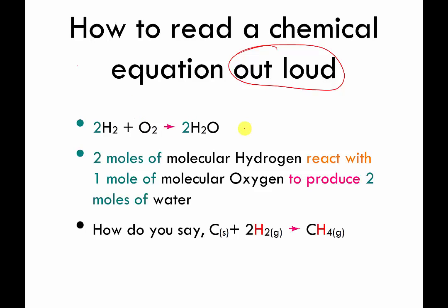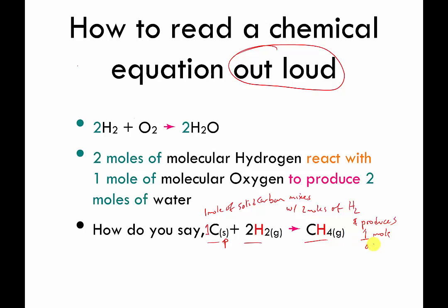Pause and think about how you would read the next equation out loud in terms of moles. There are many valid ways to say it. What I would say is: one mole of solid carbon — that 's' means solid — mixes with two moles of H2 and produces one mole of CH4 gas. Remember, if there's no number in front of a formula, the number one is implied.